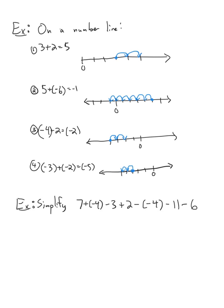A few examples to make sure we understand how addition works with integers. The first one is just addition in the whole numbers — remember, whole numbers are a subset of the integers. Start at three, go two over, and you end up at five on your number line. How does five plus negative six work? If we start at five and go six in the negative direction — one, two, three, four, five, six — we end up at negative one.